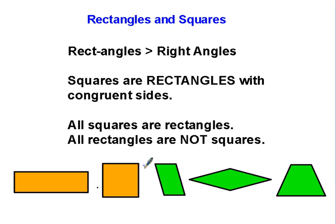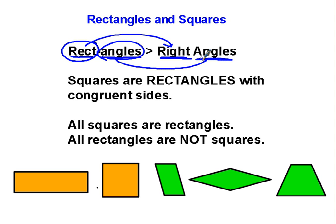Rectangles—the way I remember the definition is I break this word into two different parts. This first part, rect, sounds like the word right. And then we have angles for angles.